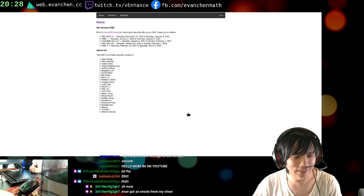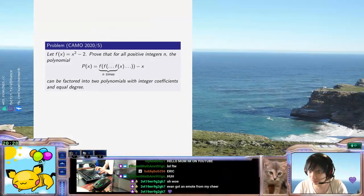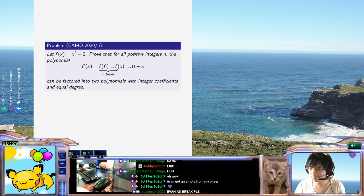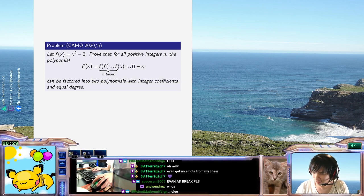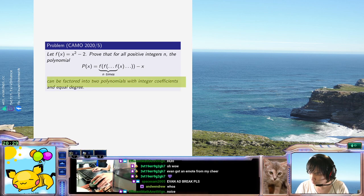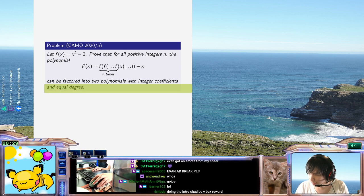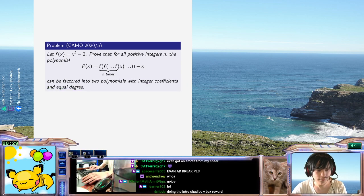So today's problem goes, Let f of x equals x squared minus 2. Prove that for all positive integers n, The iterate f composed n times minus x can be factored into two polynomials with integer coefficients and equal degree. So this is not just some standard irreducibility thing.